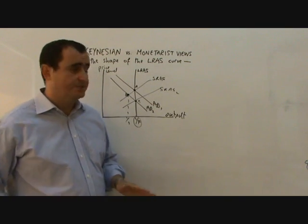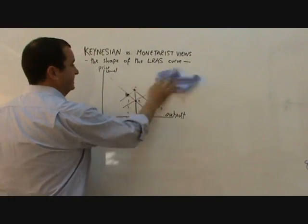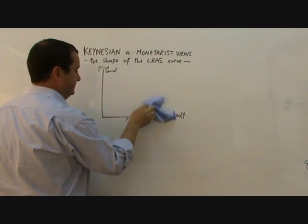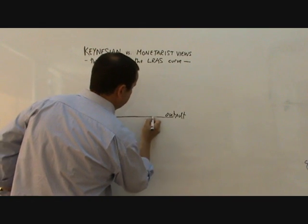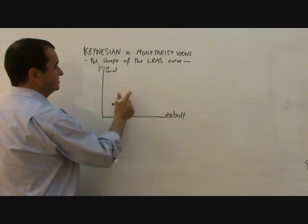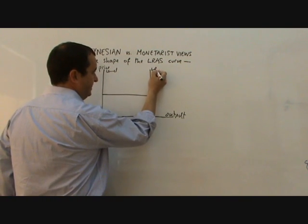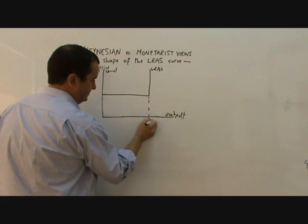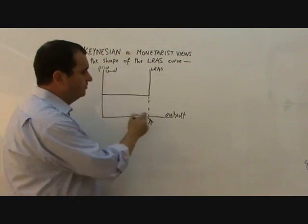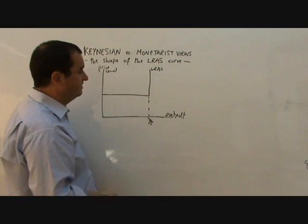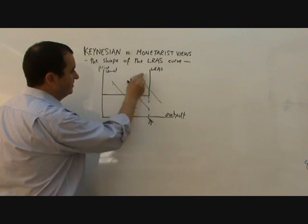Keynesians, on the other hand, do not believe that this is the case. So let me show the Keynesian view now. Keynesians originally saw the LRAS shaped like this. There's a potential maximum, YF level of output - no more than that can be made. If you like, that's the same as the limit of a PPF. And then aggregate demand might be anywhere along this curve.